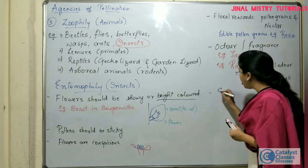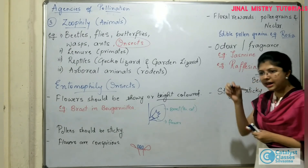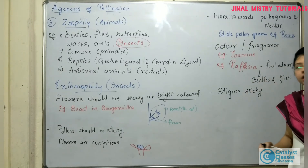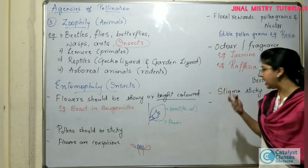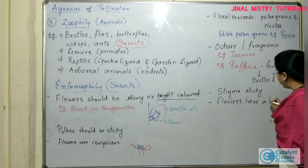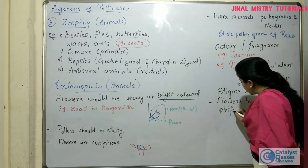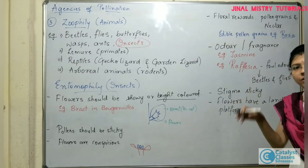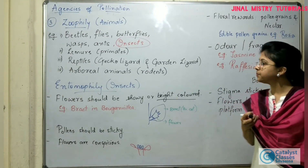The stigma should also be sticky, so that whenever the pollen grain lands on the stigma, it directly sticks and there are no chances of the pollen falling off from the stigma. One more thing is that whenever insects are involved as pollinating agents, mostly the flowers have a landing platform. On that landing platform, the insect comes and lands, and when it is sucking the nectar or eating the pollen grains, the process of pollination can be accomplished.